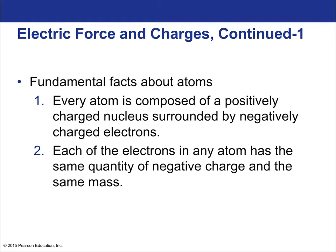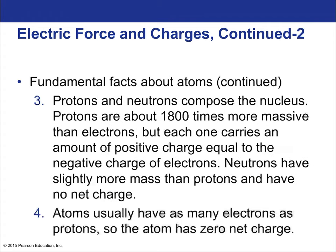Every atom is composed of a positively charged nucleus surrounded by negatively charged electrons. The nucleus is made positive by the protons inside it. Each electron has the same quantity of negative charge and the same mass. Protons are about 1800 times more massive than electrons, but carry the same magnitude of charge. Neutrons have slightly more mass than protons. Atoms usually have as many electrons as protons, giving them zero net charge—unless they become ionized.